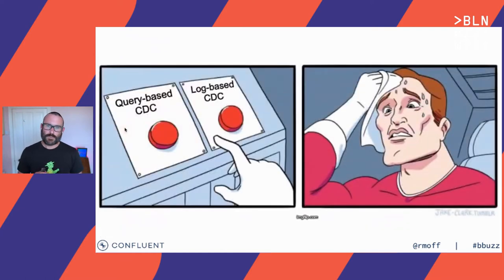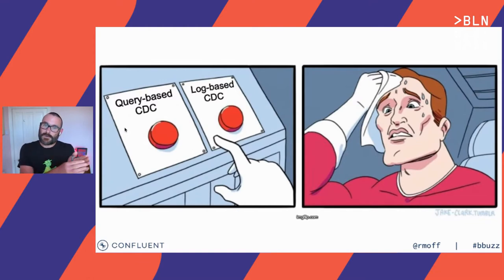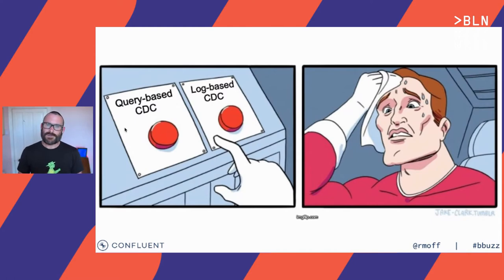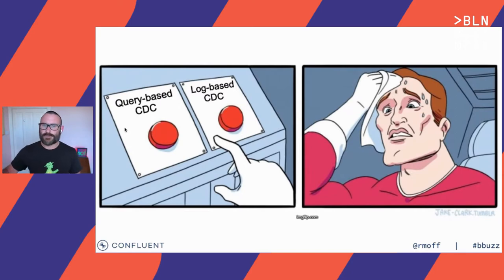So we've got two viable ways of doing the same thing — capturing changes to the data. With most of these approaches, you're going to end up with a snapshot first — here's everything in the table — and then we capture the changes of everything that happens after that snapshot. Now we need to understand how to actually choose which one to use and which is most appropriate for what we're trying to do.